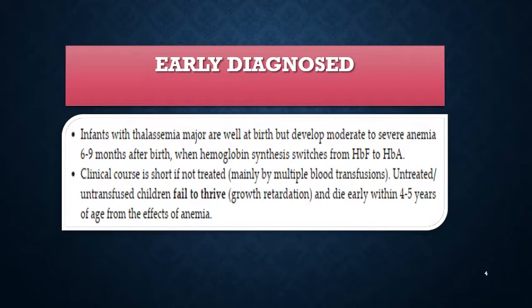Infants with thalassemia major are well at birth but develop moderate to severe anemia approximately six to nine months after birth, when hemoglobin synthesis switches from hemoglobin F to hemoglobin A. If not treated mainly by multiple blood transfusions, untransfused children fail to thrive; they are mentally and growth retarded and die early within four to five years of age from the effects of anemia.